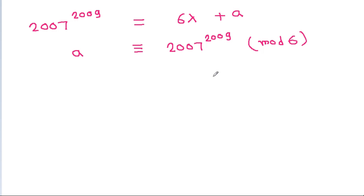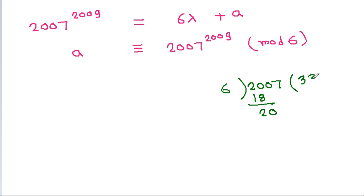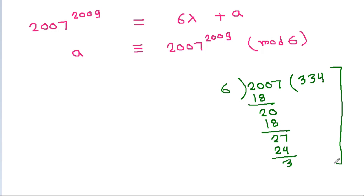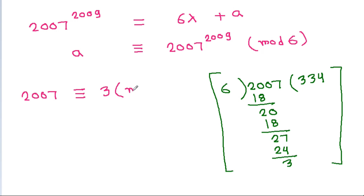If we divide 2007 by 6, the remainder is 3. So 2007 ≡ 3 mod 6.